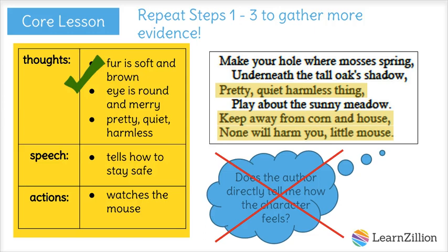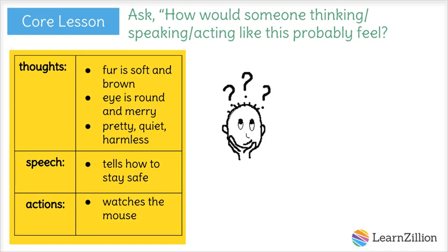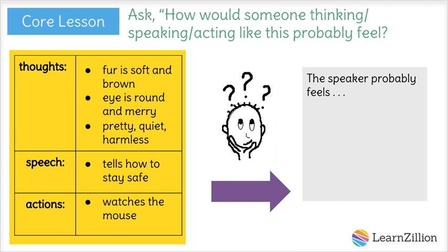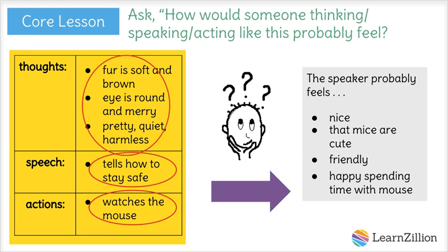Now I have quite a bit of evidence through the speaker's thoughts, speech, and actions, so I can move on to our final step: how would someone thinking, speaking, and acting like this probably feel? As I read through the describing words — soft, merry, pretty, harmless — they're all really nice, kind words. Some people might think that mice are gross or scary, but not the speaker. Words like soft and harmless tell me the speaker thinks the mouse is really nice, and words like merry and pretty tell me he might even think the mouse is kinda cute. From the speech evidence, the speaker really doesn't want the mouse to get hurt — he's really friendly towards the little mouse. And in his actions, he spends so much time watching the mouse, he must really enjoy being with the mouse.